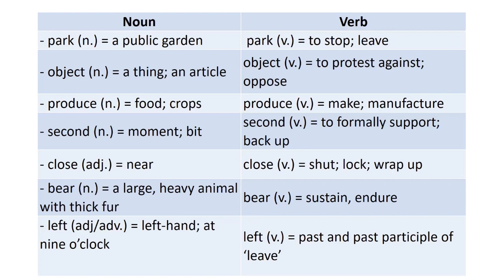Let's look at a list of homographs — words with same spelling but different grammar, meaning, or pronunciation. 'Park' as a noun is a public garden; as a verb, park means to stop or leave a vehicle. The grammar and meaning are different, but the pronunciation is the same. 'Object' as a noun means a thing or an article. As a verb, 'object' means to protest against or oppose. As you can see, the pronunciation, grammar class, and meaning are all different.